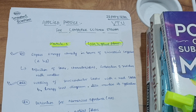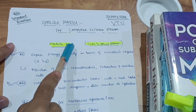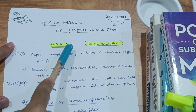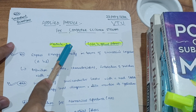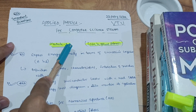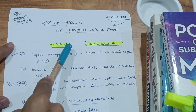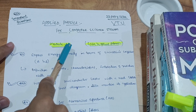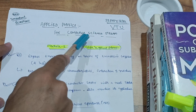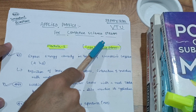Hello friends, welcome back. Today I want to discuss some important questions related to applied physics for computer science stream students. VTU has changed the whole syllabus this time for each branch. In the 2018 scheme, physics was the same for each branch, but now they have added and deleted some chapters and made it a separate subject for each branch.